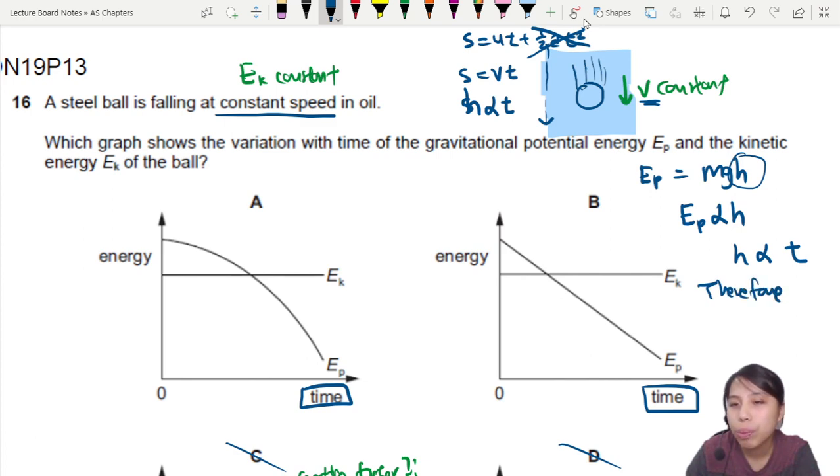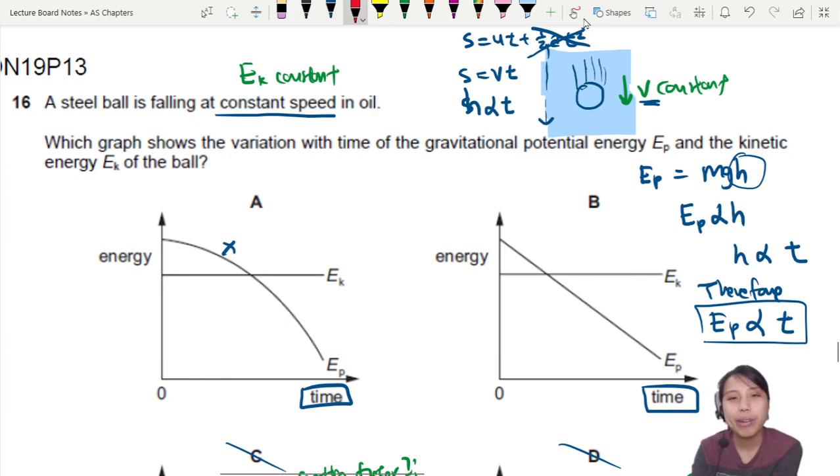So therefore you can say EP is proportional to height, and height is proportional to time linearly. Therefore we put together the whole chain. Therefore potential energy is going to be proportional to time, and that is a linear relationship. Got any square t, square t, square root? No, right? So straight line. So there'll be no curves. This is not correct, and B is our best choice.